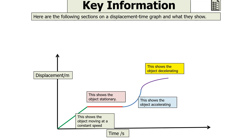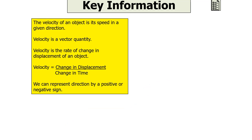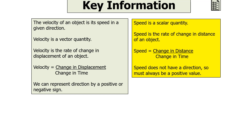It's important to note that we can look at velocity in more detail. The velocity of an object is its speed in a given direction — it is a vector quantity and the rate of change in displacement, so velocity equals change in displacement over change in time. We can represent the direction of velocity with either a positive or negative sign. This contrasts with speed, which is a scalar quantity — the rate of change of distance travelled. Speed equals change in distance divided by change in time, and it does not have a direction, so it must always be a positive value.